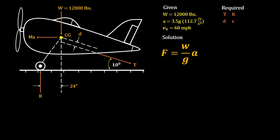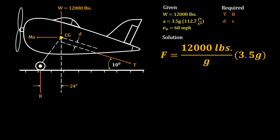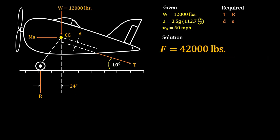Now let's plug in our values. First, let's substitute our value for weight, and then for our acceleration. Notice we can cancel out our gravity, leaving us with simply 12,000 pounds times 3.5, and we should arrive at 42,000 pounds.